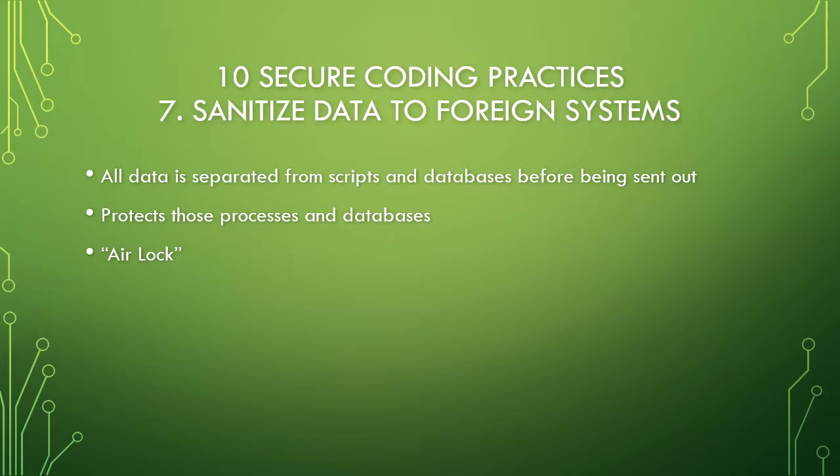Number seven is to sanitize data to foreign systems. When you are sending data outside of your program, you need to make sure it's not linked to a process that uses that data, and especially that it's not linked to your database. The way I explain this is essentially like an airlock — you put all the data in an airlock, so that when you open it to the outside world, there's no way anything outside is going to be able to get to your processes or your database.